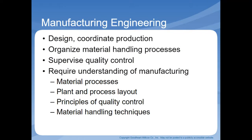Manufacturing engineering: they design and coordinate production, organize material handling processes, and supervise quality control. They require an understanding of manufacturing, material processes, plant and process layout, principles of quality control, and material handling techniques. In the automotive example, a manufacturing engineer would design the plant where the cars or engines are built.